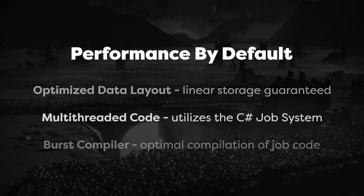The second is multi-threaded code. Systems in pure Unity ECS are implemented as jobs, and are run by Unity's new C# job system. It allows you to write multi-threaded code in a safe and simple way. With very little effort, all of your systems will run in parallel and utilize all of the cores in your processor.